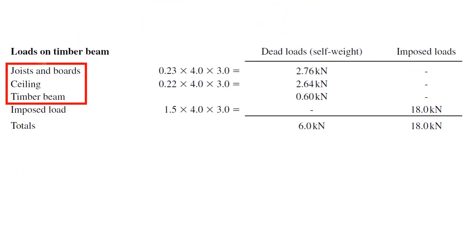These all three values are dead loads. That's why I've written them under the dead load column. First load type is joists and boards. This 0.23 is the value of self-weight of boards and floor joists, which is given in the design data. 4 times 3 means the area of the shaded area. Once we multiply these three values, we can get 2.76 kN.